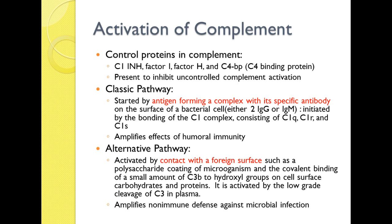Each pathway starts in a different way. There are control proteins involved — C1 inhibitor protein, Factor I, Factor H, and C4 binding protein. Those are present to inhibit uncontrolled complement activation. Obviously, once complement gets started, you don't want it to just go completely crazy. You have to have something to be able to slow it down.